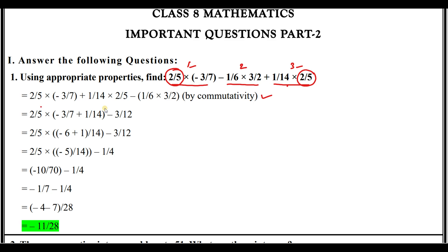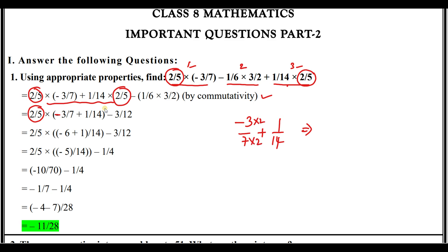In the second step, I'm taking the common factor 2/5 outside. If we take 2/5 outside, the remaining terms are (-3/7 + 1/4). Now for (-3/7 + 1/4), take LCM — make the denominator the same. Multiply the first fraction by 2 in both numerator and denominator: you get -6/14 + 1/14. Since the denominators are the same, add the numerators: -6 + 1 = -5, giving -5/14.